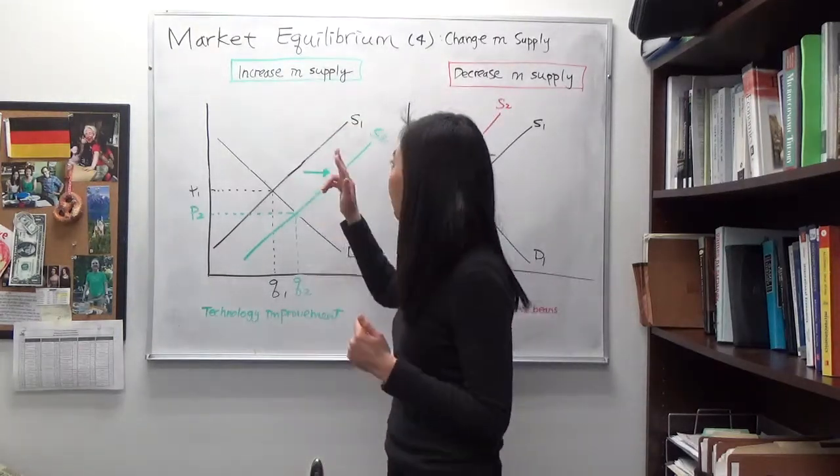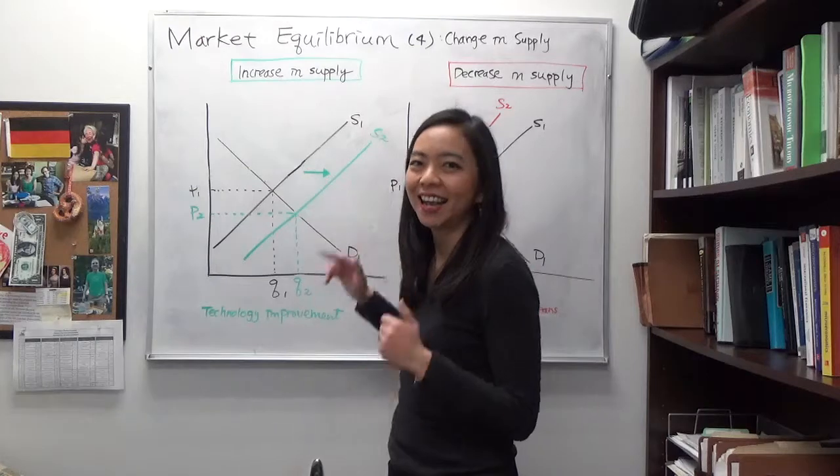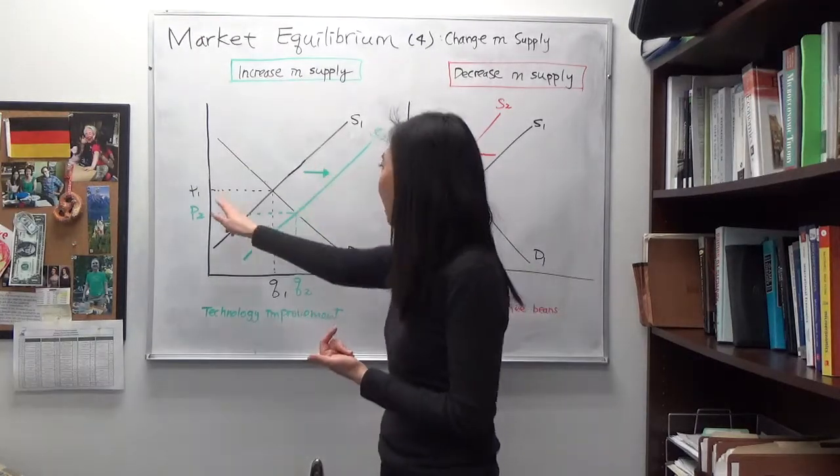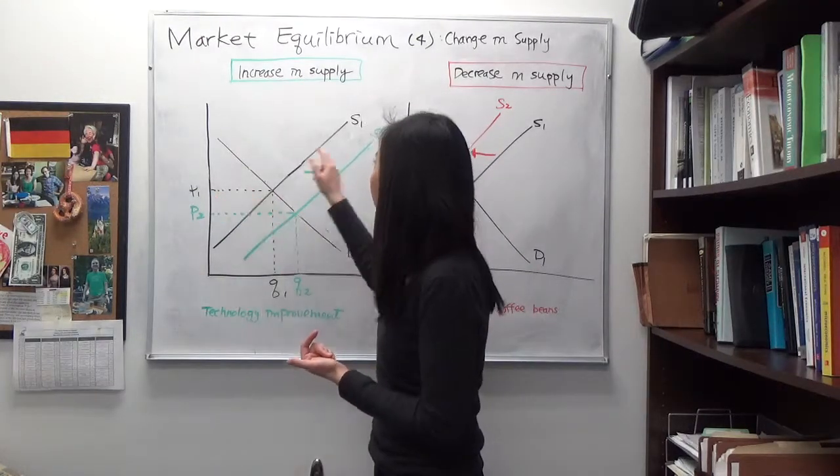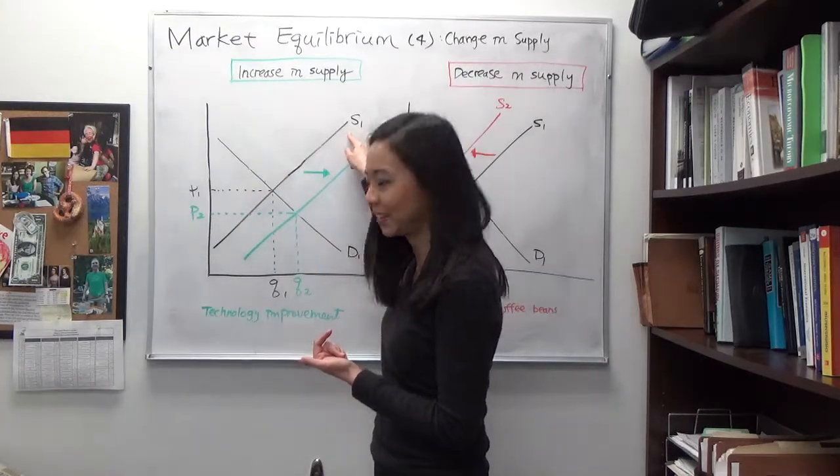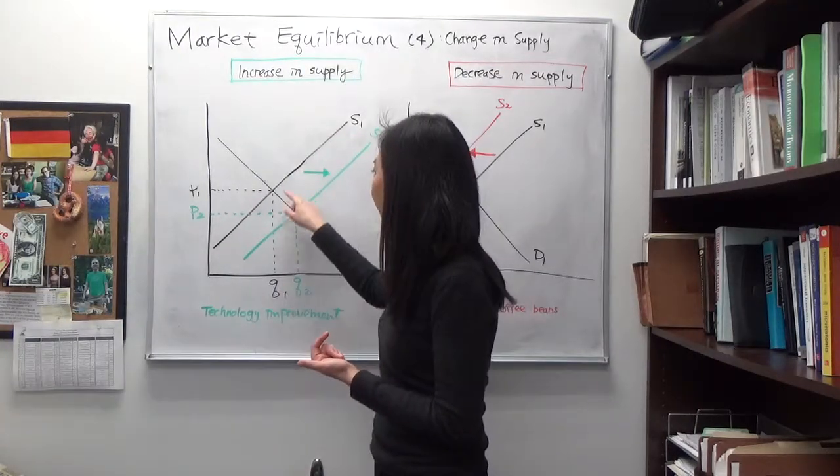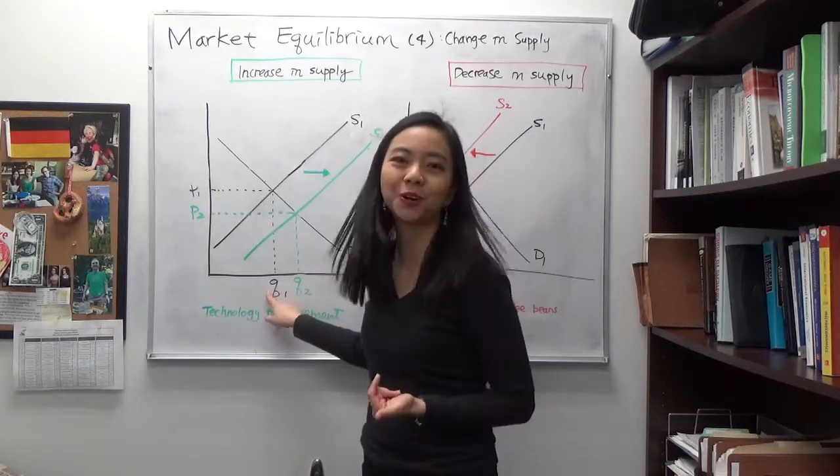So that will shift our supply curve to the right, and you can see that before the shift you have an intersection of supply curve S1 and D1. They gave you the original price and original quantity.